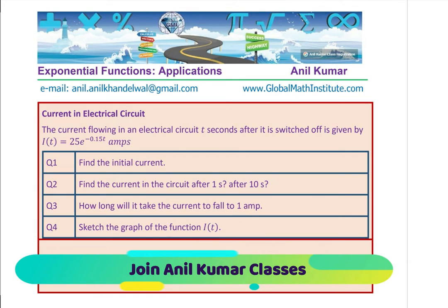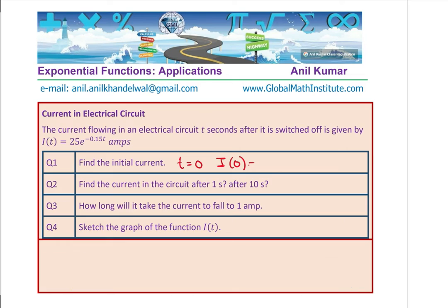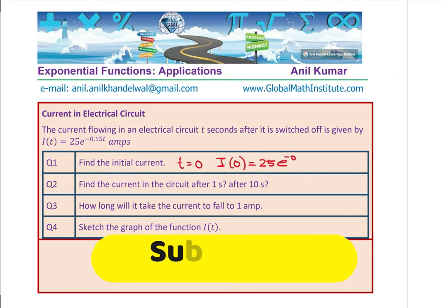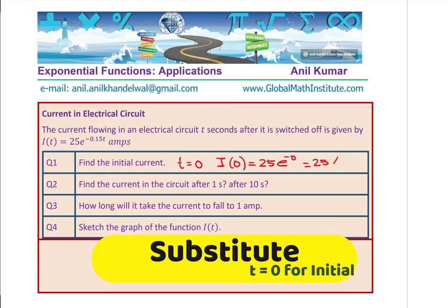We have our questions here. For question 1, as I said, we have to just substitute t = 0. So I(0) = 25·e^(−0×0.15) = 25·e^0 = 25·1 = 25 amperes.